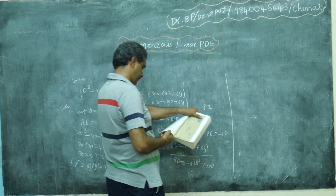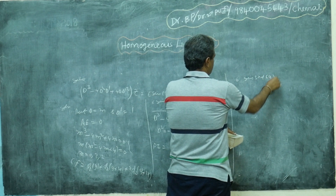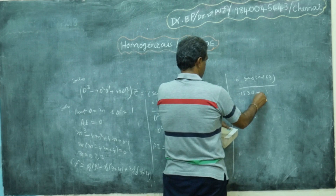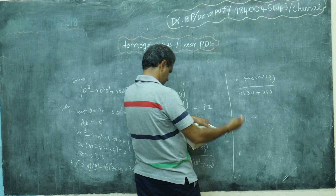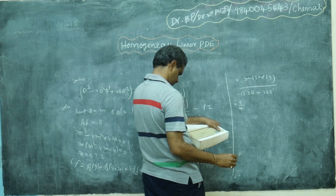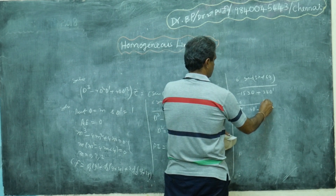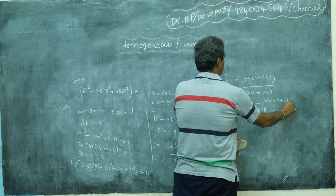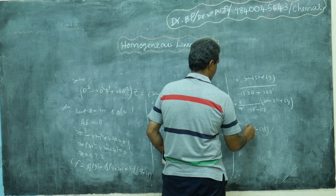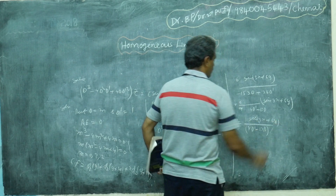If you simplify this, you will get 6 sin(3x + 6y) divided by (-153D + 36D'). You can take 9 as common, which gives (6/9) times (4DD' - 17D) sin(3x + 6y), which simplifies to 2/3 times that expression. This is the right stage.